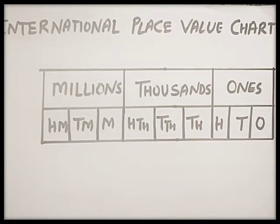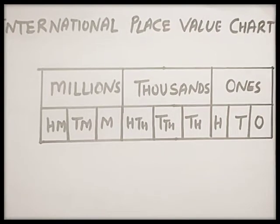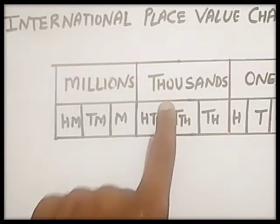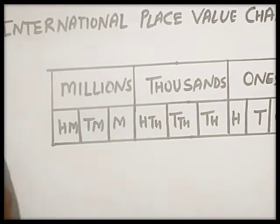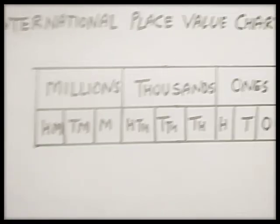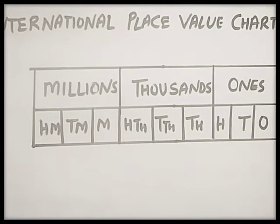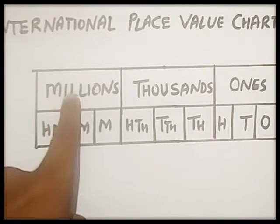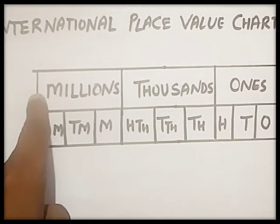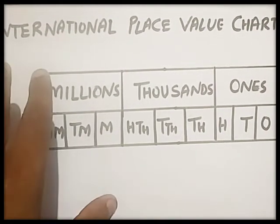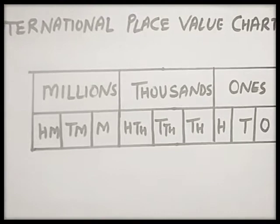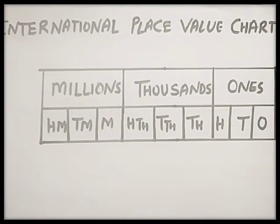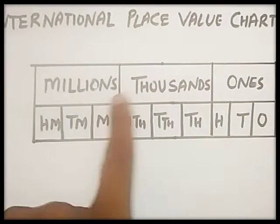In the Indian place value chart there are 4 blocks: ones, thousands, lakhs, and crores. But in the international chart, there are only 3 blocks according to your syllabus. After millions there are billions and trillions also, but in your class, use these 3 blocks only: ones, thousands, and millions.